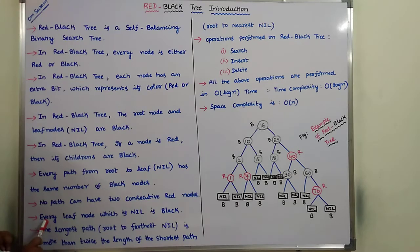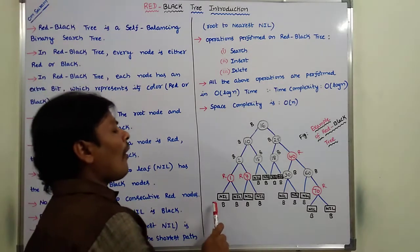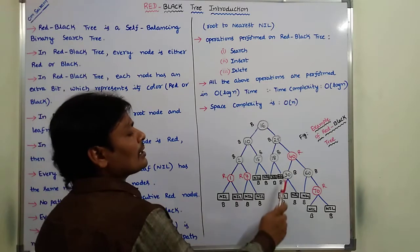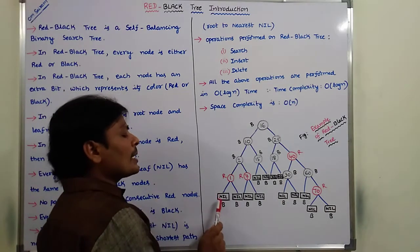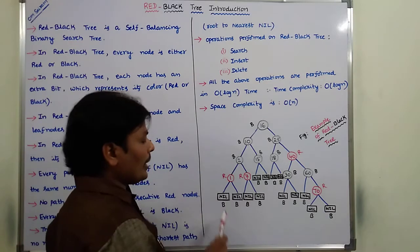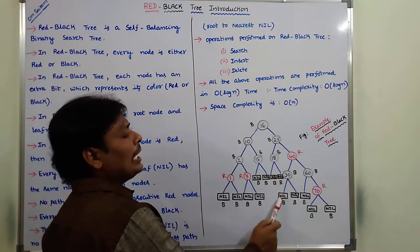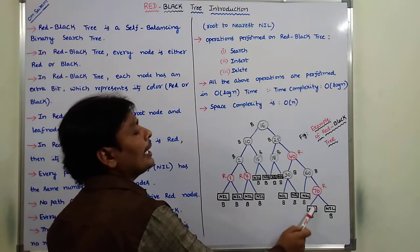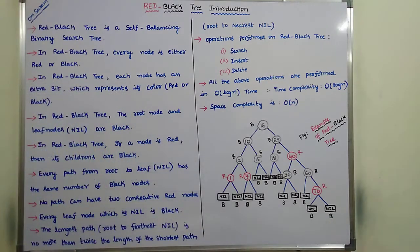Every leaf node, which is nil, is black. All leaf nodes are nil nodes, and all nil nodes are black nodes.